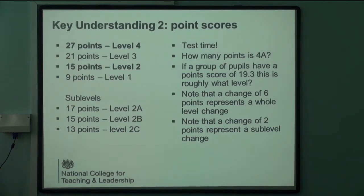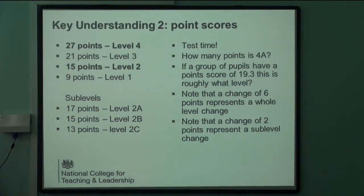A lot of the information in RaiseOnline is in actual levels, but there's also quite a bit that still relates to the average point score. Level two is 15 points, level four is 27 points — that's two levels' progress, which is expected progress. We know that with sub-levels it doesn't quite work like that at key stage two. At key stage two you can actually make three levels' progress with only progressing through seven sub-levels.